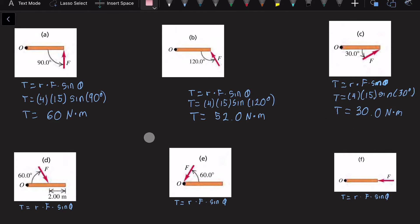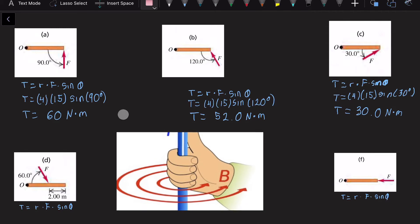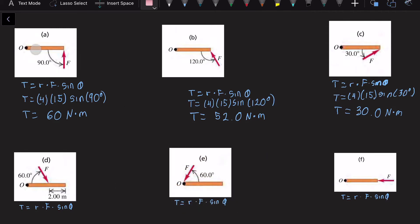Now we're going to apply the right-hand rule for every single case. Imagine that we have our hand on the rod right here and the palm is facing the force. So in this case it would be out of the page.